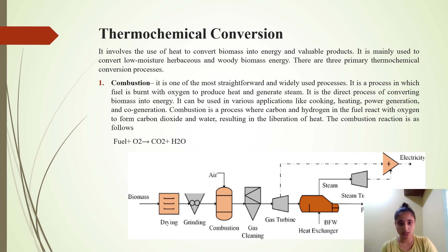The first is combustion. It is one of the most straightforward and widely used processes — the process in which fuel is burned with oxygen to produce heat and generate steam. It is the direct process of converting biomass into energy and can be used in various applications like cooking, heating, power generation, and cogeneration.